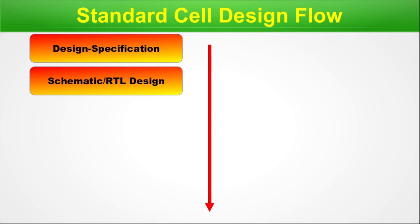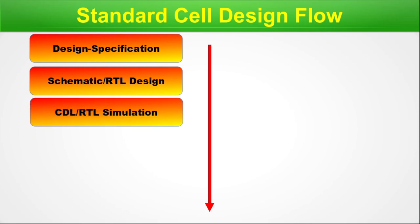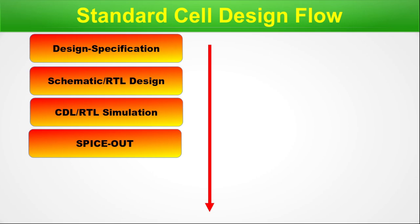Next we do the schematic or RTL design. Schematic is for analog circuits or SPICE circuits, and RTL is for digital hardware description language. Next we do the CDL or RTL simulation to get the electrical characteristics. Then we do the SPICE out — for CDL or schematic we can get the SPICE netlist. Remember this step, because later when I discuss characterization, this SPICE netlist will be very important.